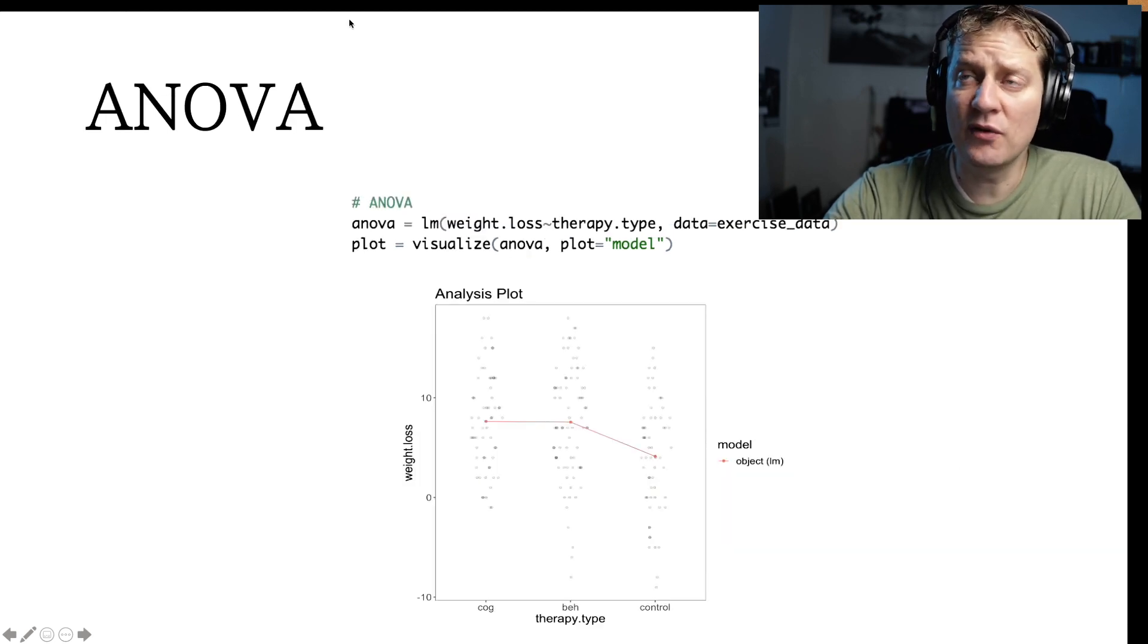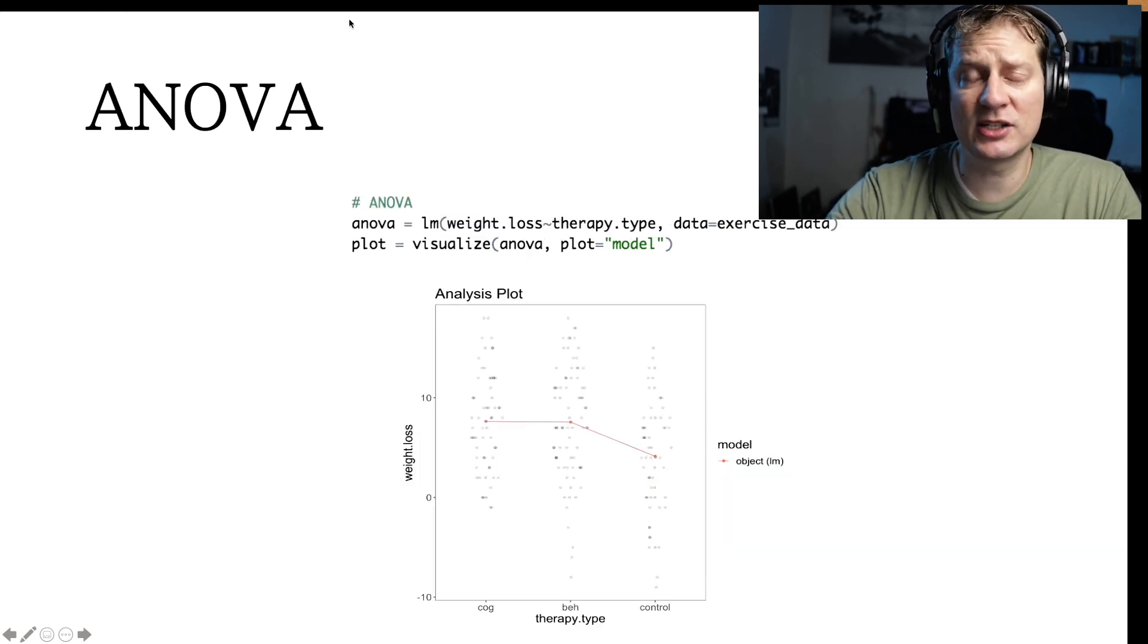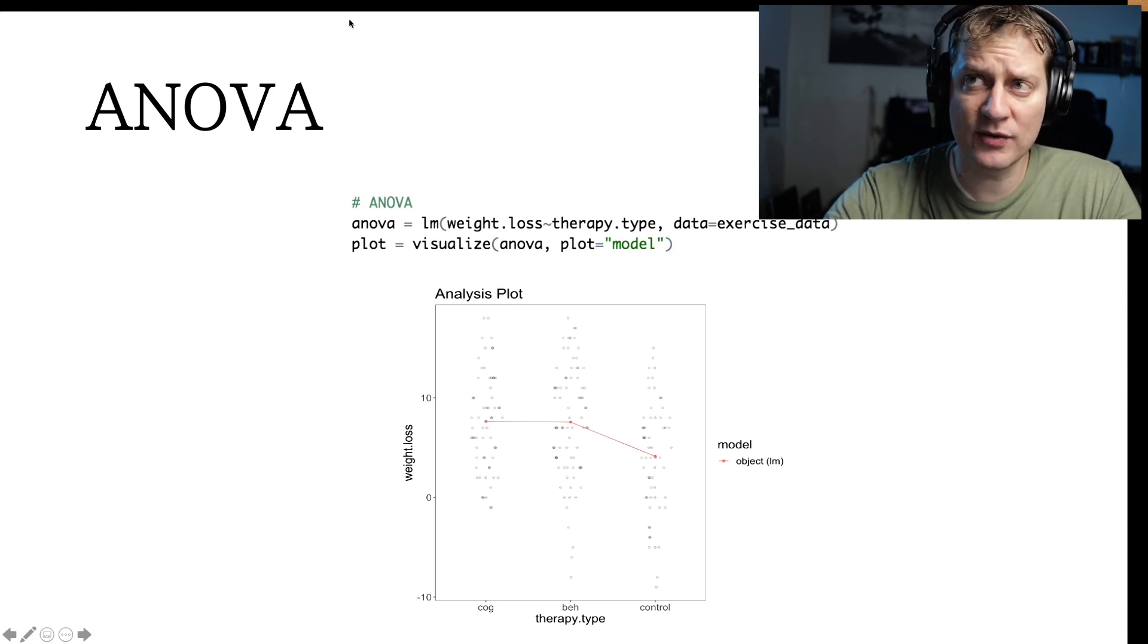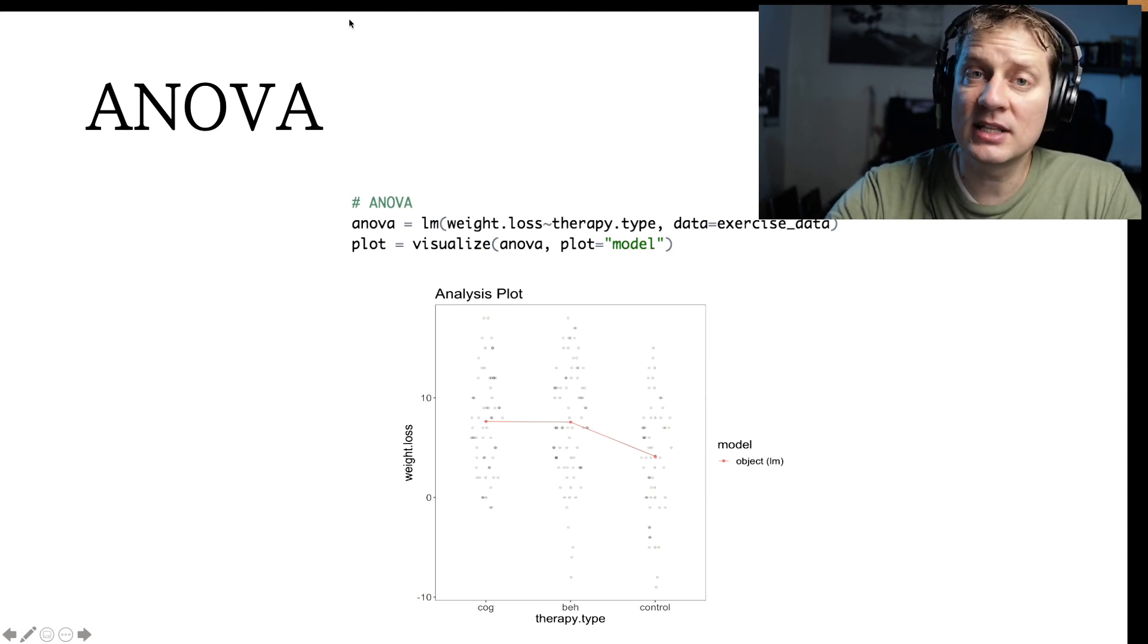If we were to look at an ANOVA, we might use code like this to fit our model using the linear model function in R. Then we could again use the visualize function in FlexPlot to visualize the statistical model. We would see three different groups on the x-axis and their scores on the y-axis, with a red line indicating the means.